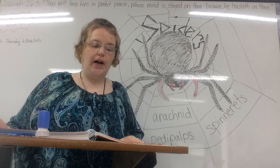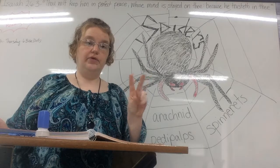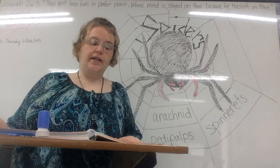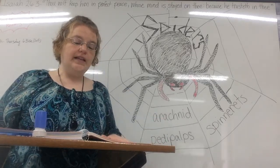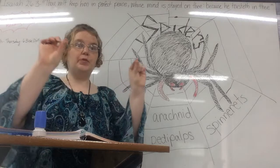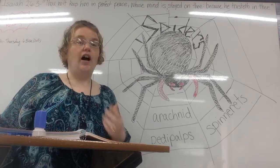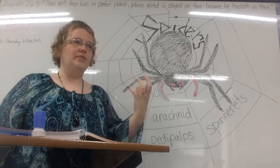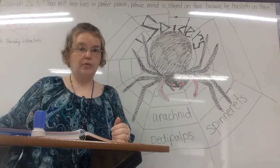Spiders are arthropods with two body parts and eight legs. The stages of a spider's life cycle are egg, nymph, and adult — a kind of incomplete metamorphosis. Spiders are part of a group of arthropods called arachnids. Other arachnids include scorpions, daddy longlegs, mites, and ticks. They all have certain characteristics that make them different from other species, but the biggest part of the arachnid group is definitely spiders.